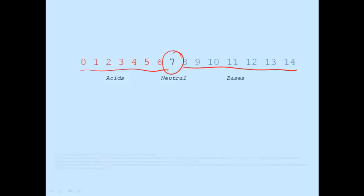But what does this mean? An acidic solution has a greater concentration of hydrogen ions than hydroxide ions, and a basic solution has a greater concentration of hydroxide ions than hydrogen ions. So, acids have more hydrogen ions than hydroxide ions, and bases have more hydroxide ions than hydrogen ions.